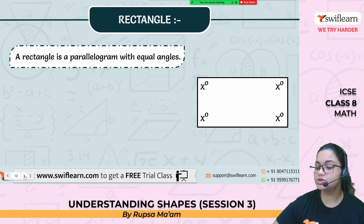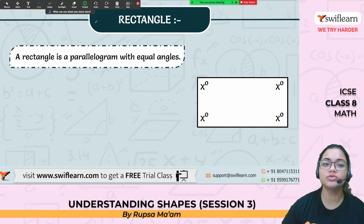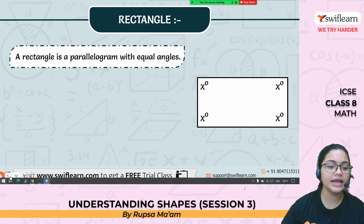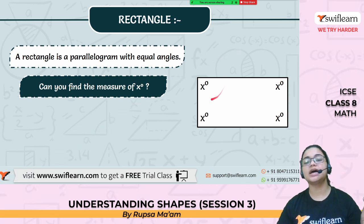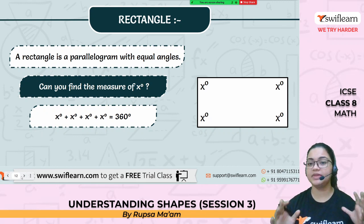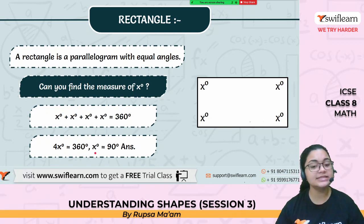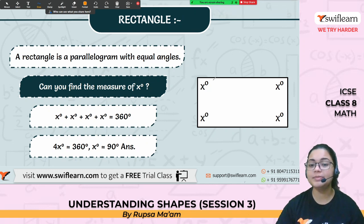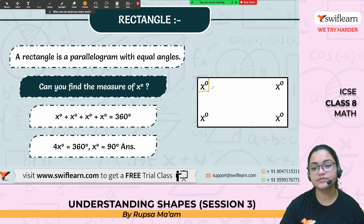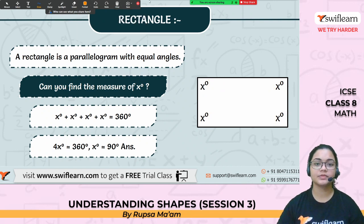Now rectangle. A rectangle is a parallelogram with equal angles. All 4 angles of rectangle are completely equal. How do we find the measure of x degree, each angle of a rectangle? The sum of all four sides of a quadrilateral is 360 degrees. So x plus x plus x plus x equals 360 degrees, or 4x equals 360 degrees, or x equals 90 degrees. Each angle of a rectangle is 90 degrees.